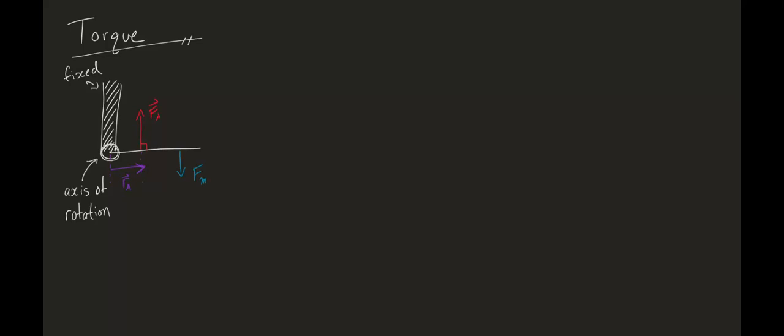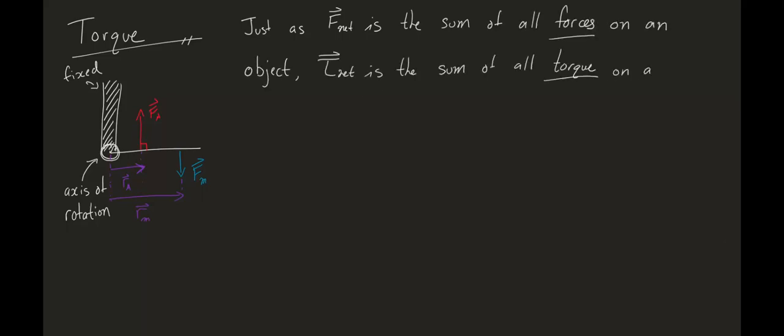So, let's call this force in blue, Fm, for mass, with lever arm Rm. Just as Fnet is the sum of all forces on an object, Tau net is the sum of all torques on an object. In our picture here, the net torque is the sum of torque A plus torque M. And we simply plug in our equations of torque defined earlier.